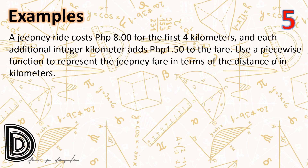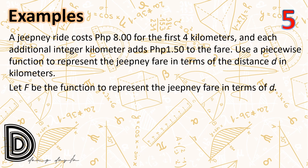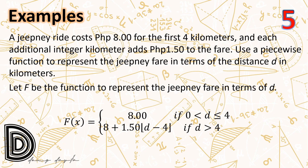A jeepney ride costs 8 pesos for the first 4 kilometers, and each additional integer kilometer adds 1.50 pesos to the fare. Using a piecewise function, the fare f in terms of distance d is: f(d) = 8 if 0 < d ≤ 4; and f(d) = 8 + 1.50 · ⌊d - 4⌋ if d > 4. The floor function ⌊d - 4⌋ is used because we multiply only the integer kilometers in excess of 4 by 1.50 pesos.